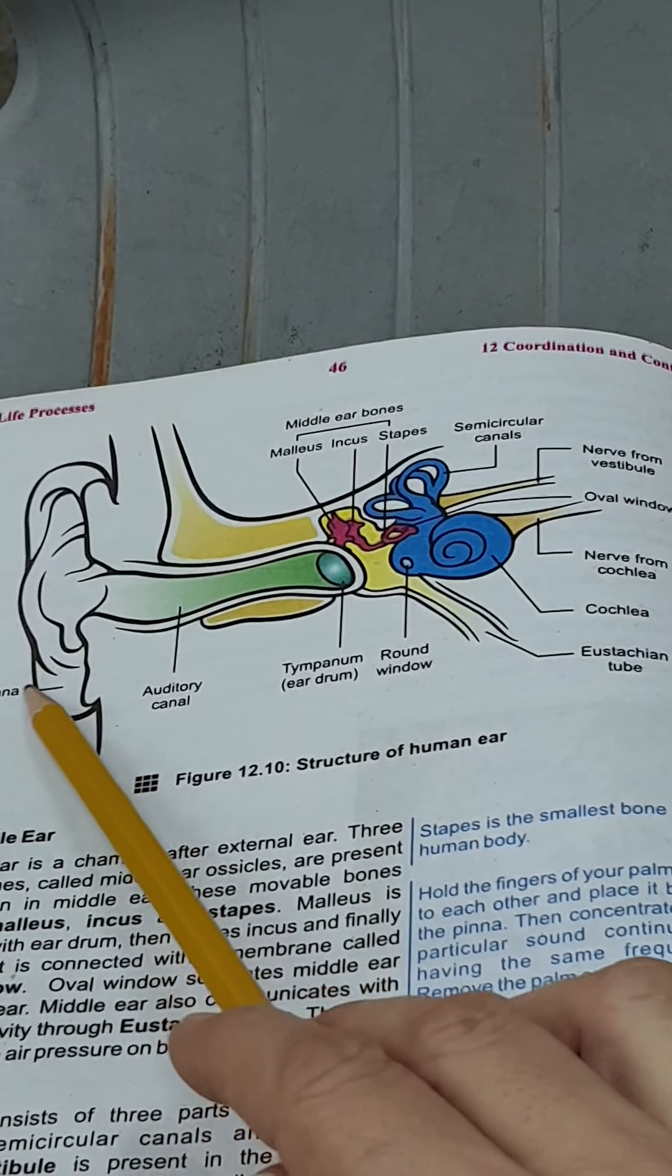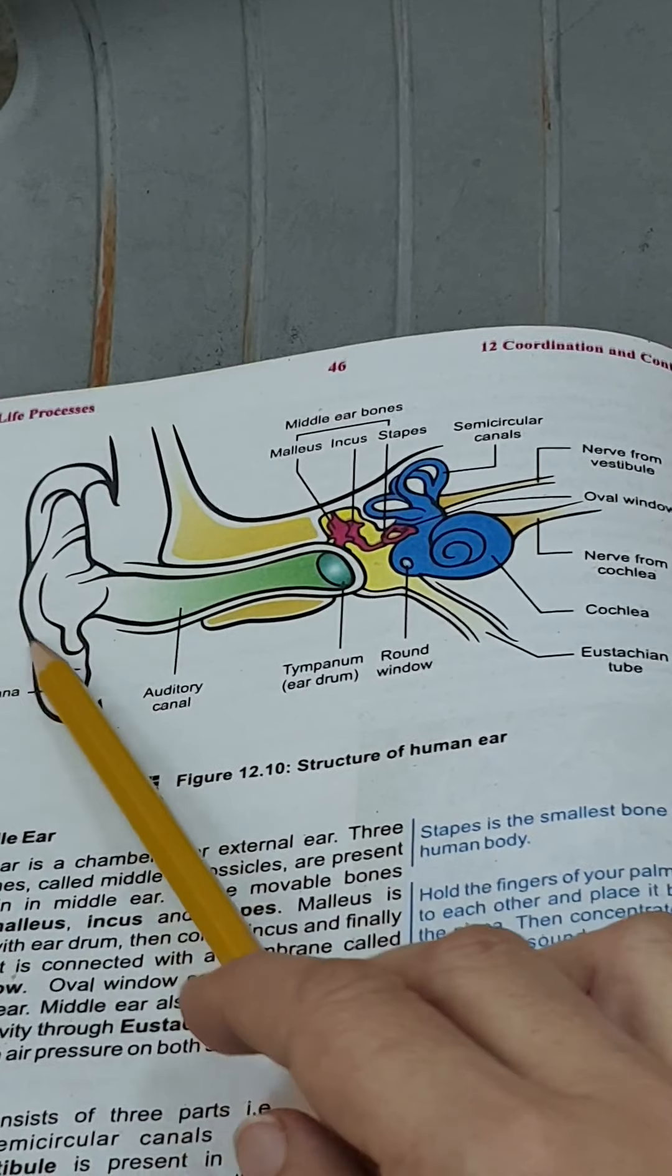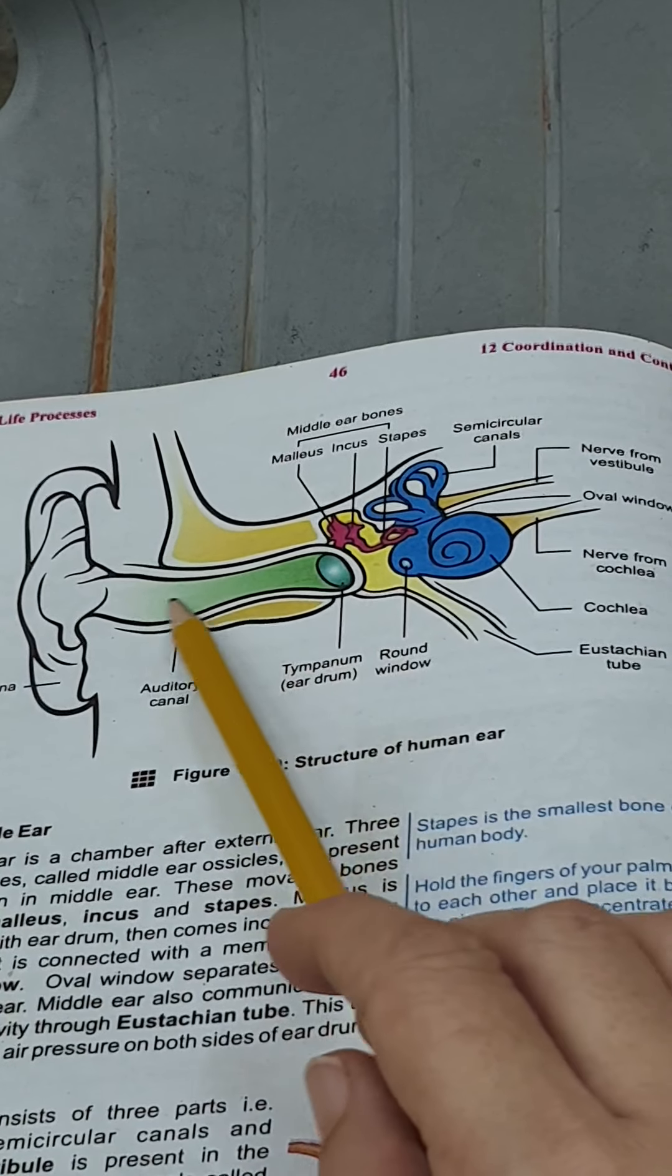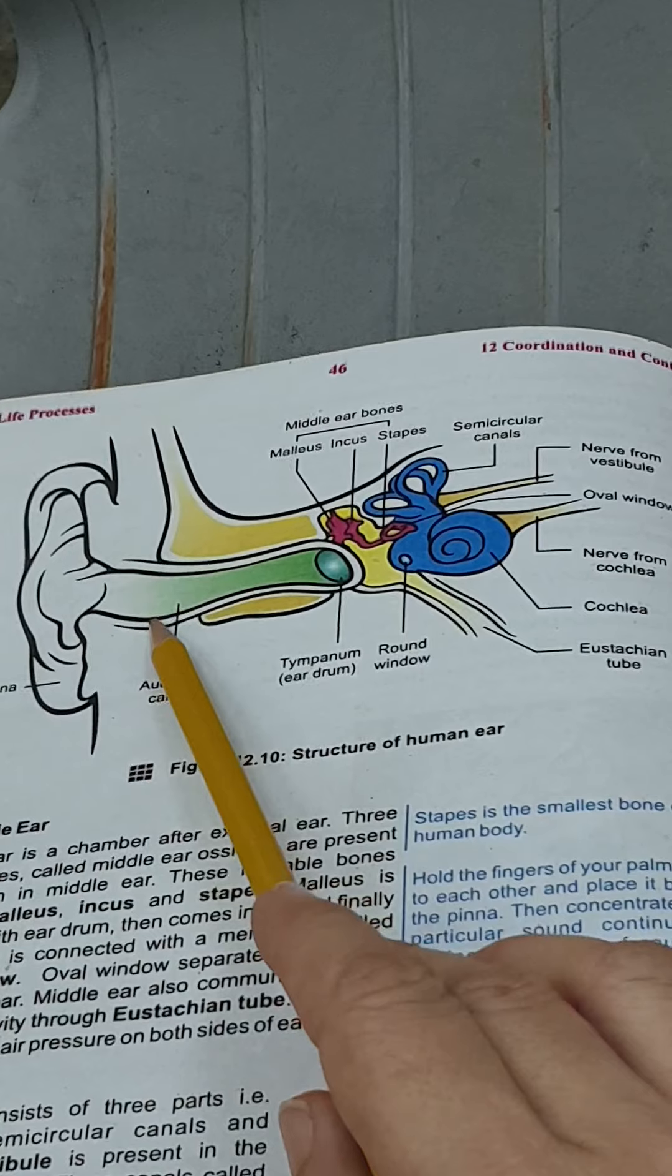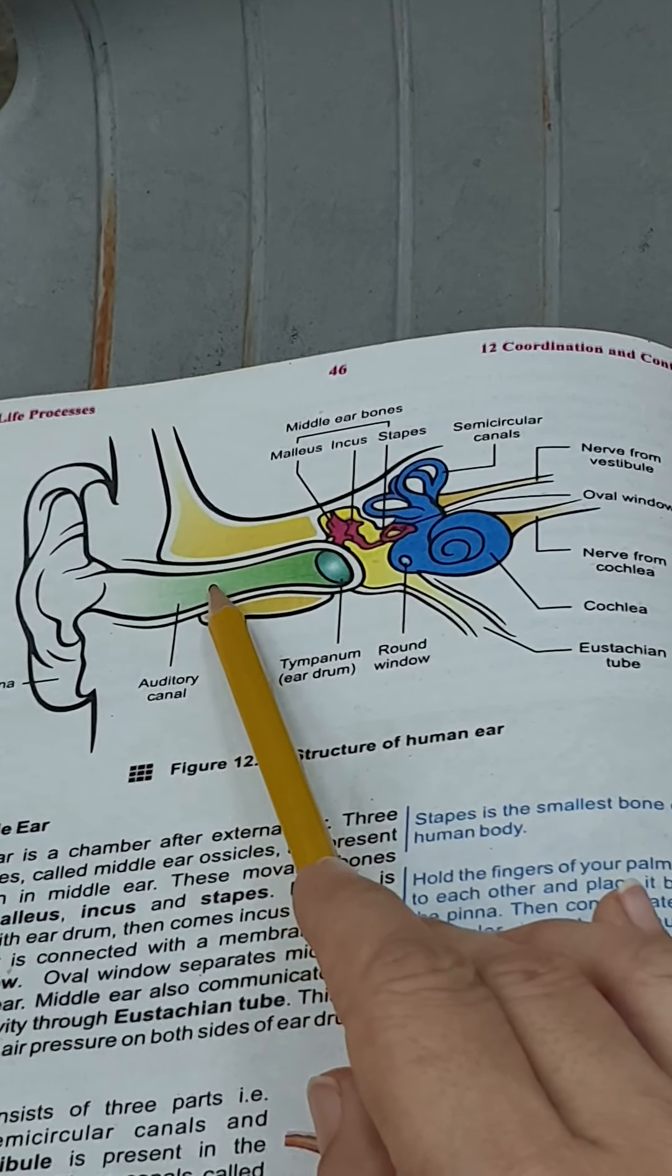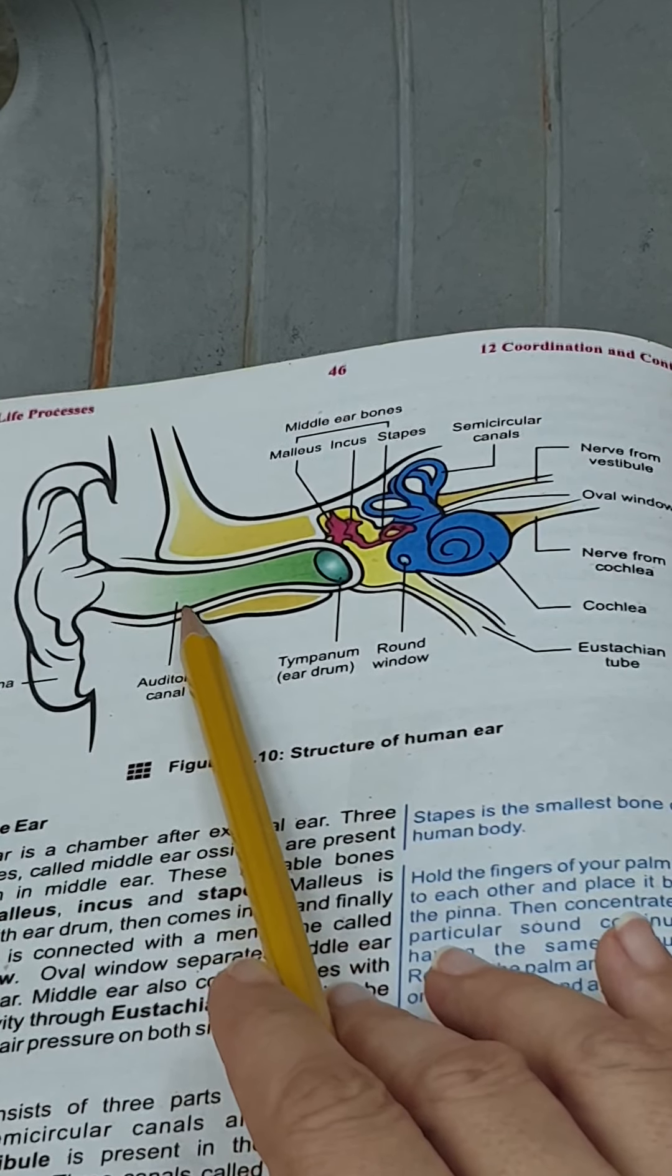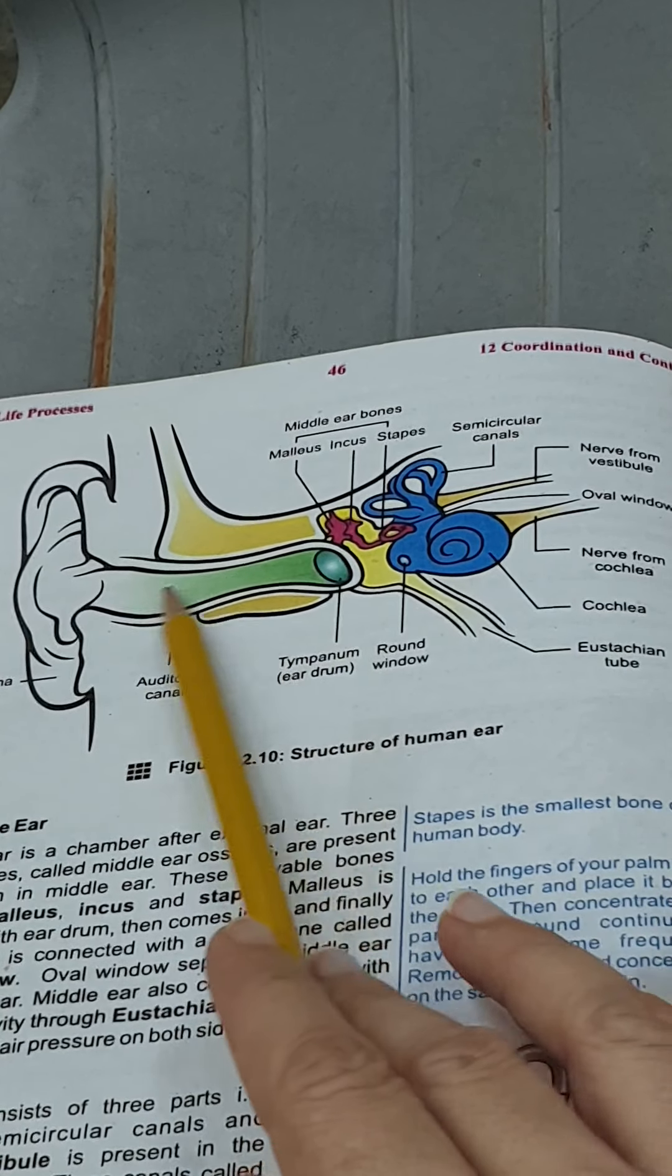Pinna is made up of cartilage and it collects the sound waves and puts them into the auditory canal. The auditory canal is a long tube which is connected to the tympanum membrane. This auditory canal has glands which produce wax, and this wax is used for trapping insects or any other dust particles that can go inside the ear.